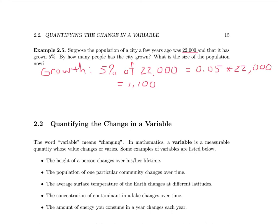The second part of this example asks what is the size of the population now, or the current size. So let's figure that out. To calculate the current size, I take how many people there were a few years ago and add how many new people there are in the city. That gives me the population currently. If I add, I get 23,100.